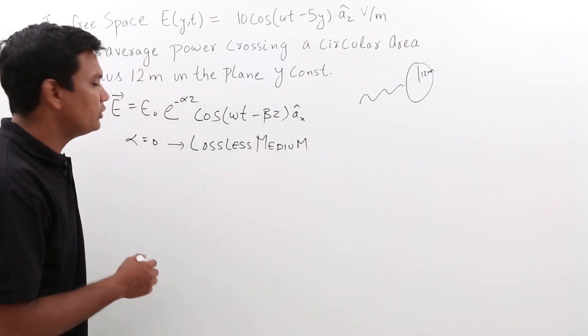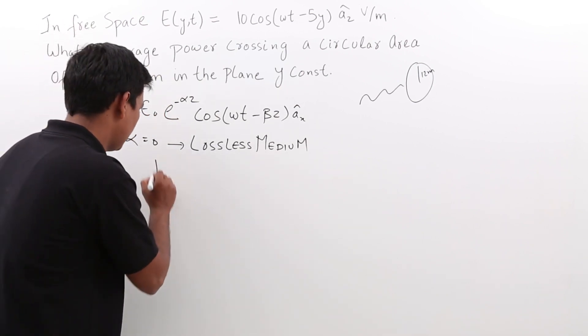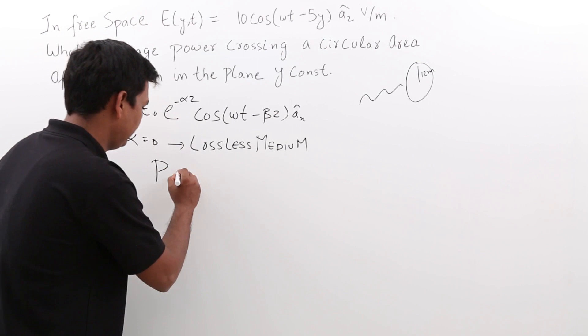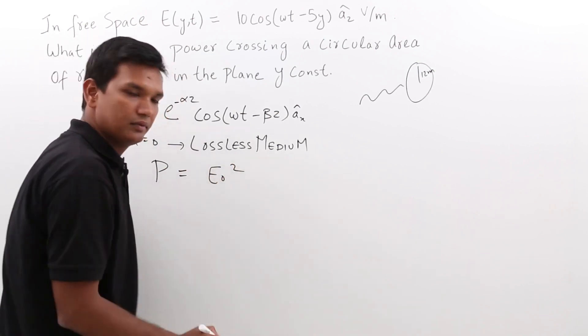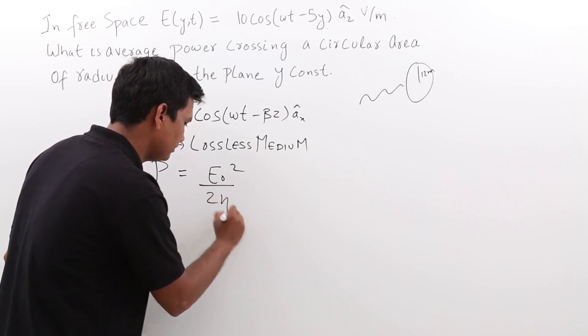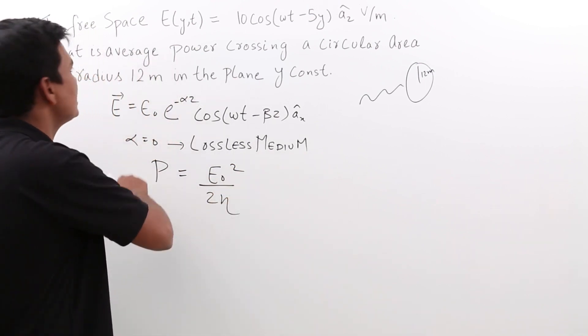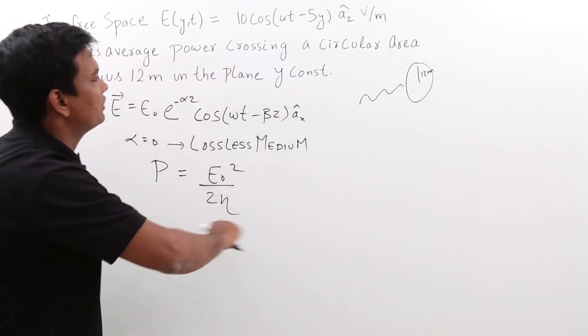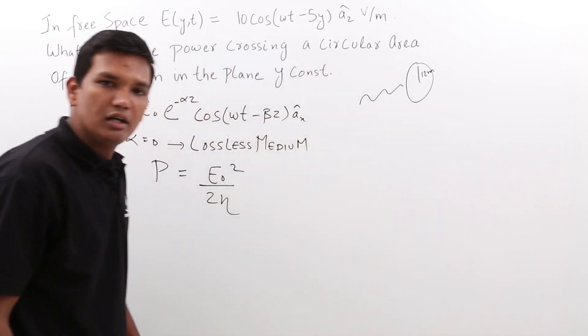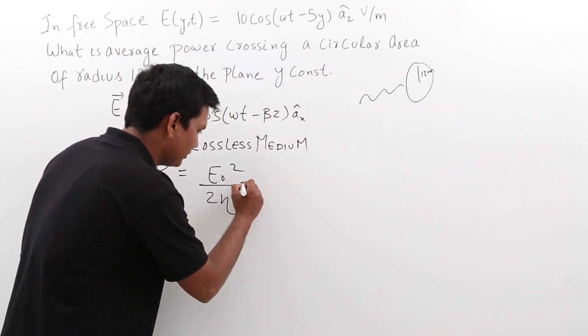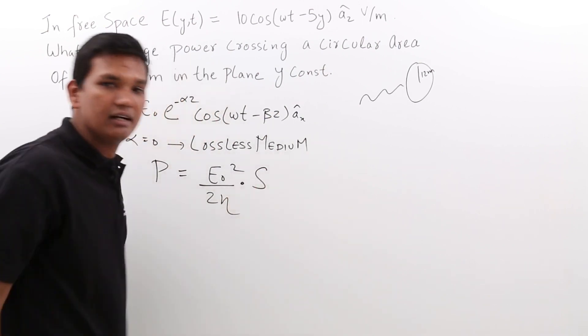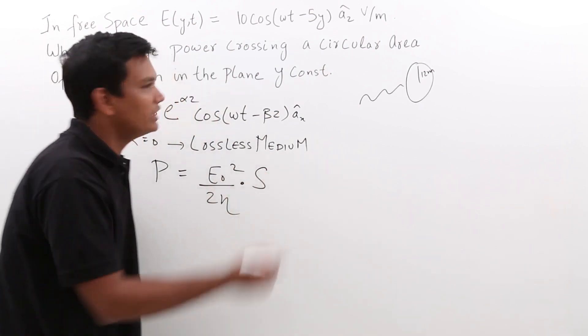Let us solve this. We know that for a lossless medium P would be given by E₀²/(2η), but it is being asked the average power crossing a circular area. We have already seen how to do this in the previous videos. It would be nothing but into the area that would be given by S. So, it is a circle.